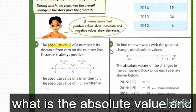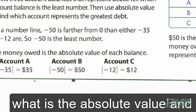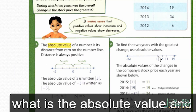The absolute value of 5 is written as two bars with 5 in the middle, and the absolute value of negative 5 is written as two bars with negative 5 in the middle. Both equal 5. Two opposite numbers have the same absolute value because absolute value represents distance from zero, which is always positive.